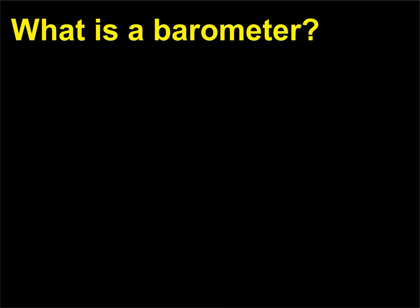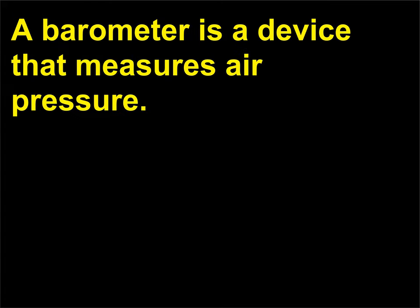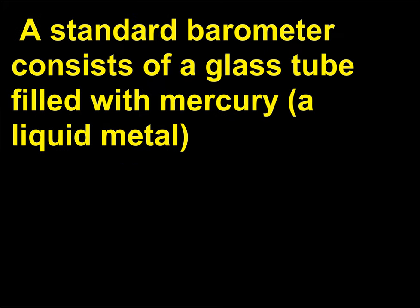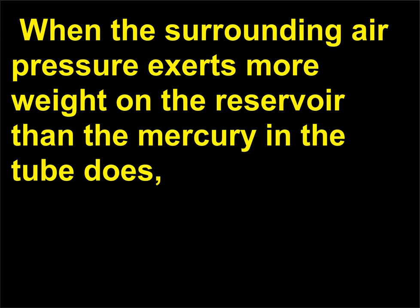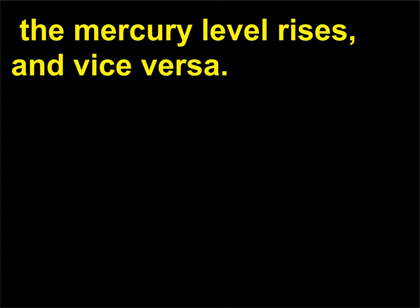What is a barometer? A barometer is a device that measures air pressure. A standard barometer consists of a glass tube filled with mercury, a liquid metal, that is inserted into a reservoir which also contains mercury. When the surrounding air pressure exerts more weight on the reservoir than the mercury in the tube does, the mercury level rises, and vice versa.